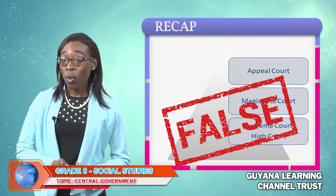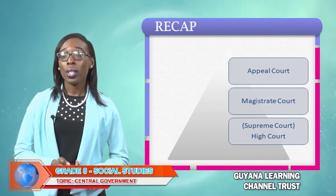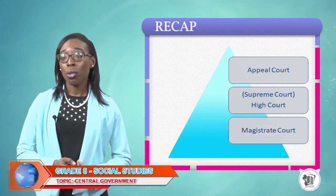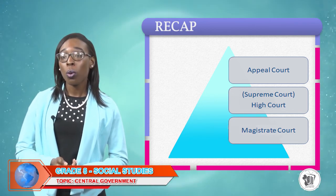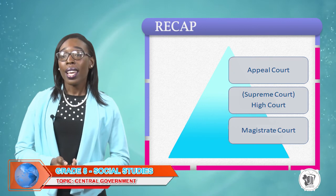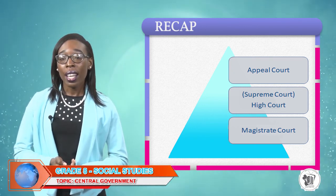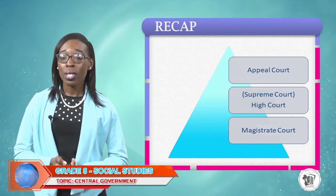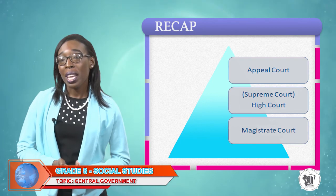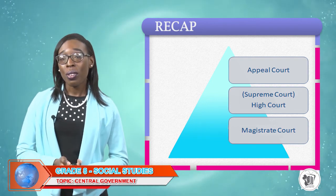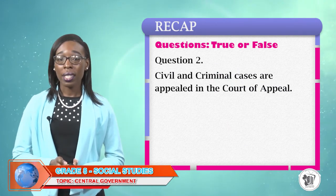If you said false, you are correct. The Magistrate's Court is at the base of the hierarchy of courts, which means they're at the bottom. So where you're seeing Supreme Court and the High Court, instead, the Magistrate's Court should be there. And the Supreme Court and the High Court now go into the place where you're currently seeing the Magistrate's Court. If you got that answer correct, good job. Let's move on to our second true or false question.